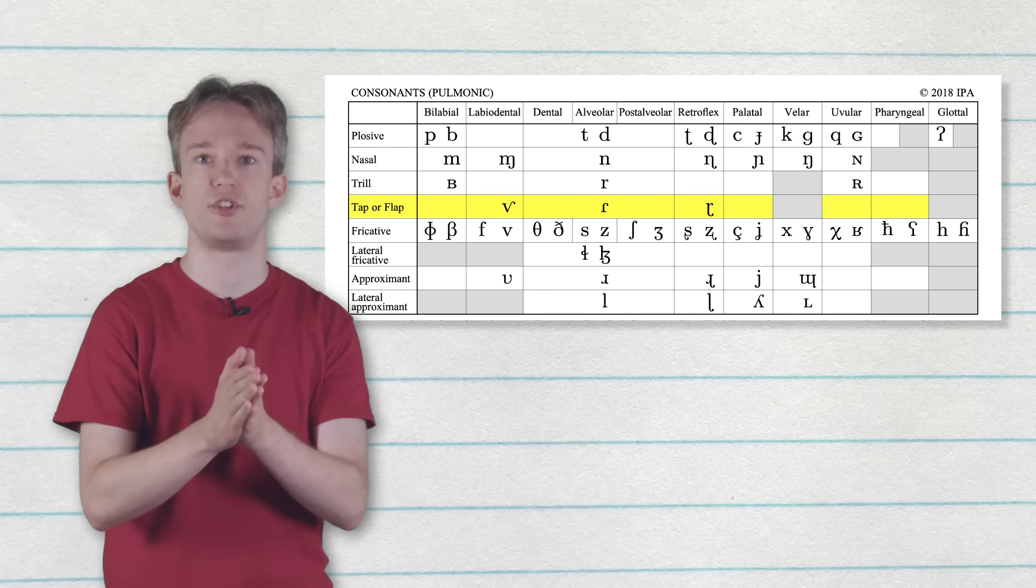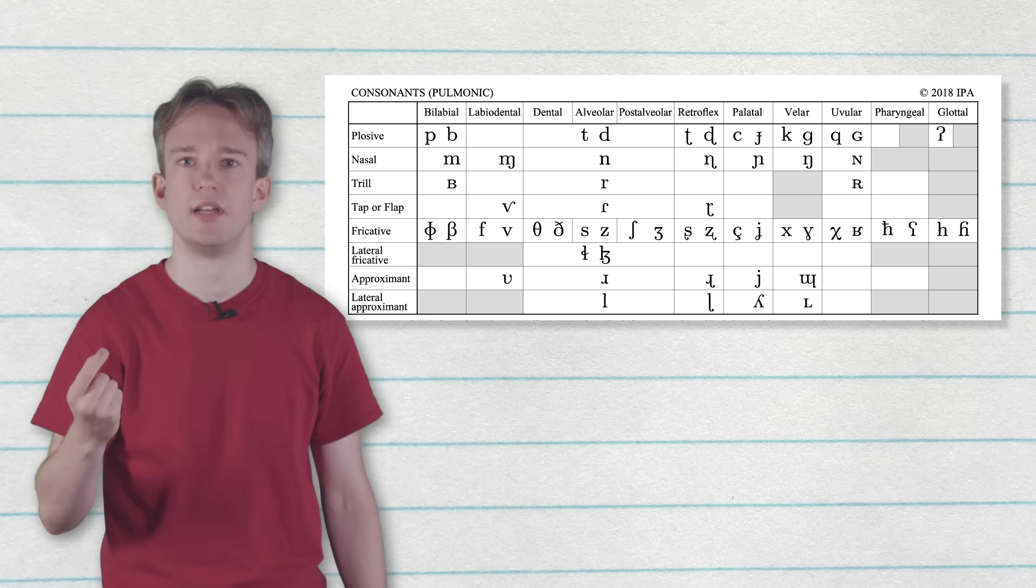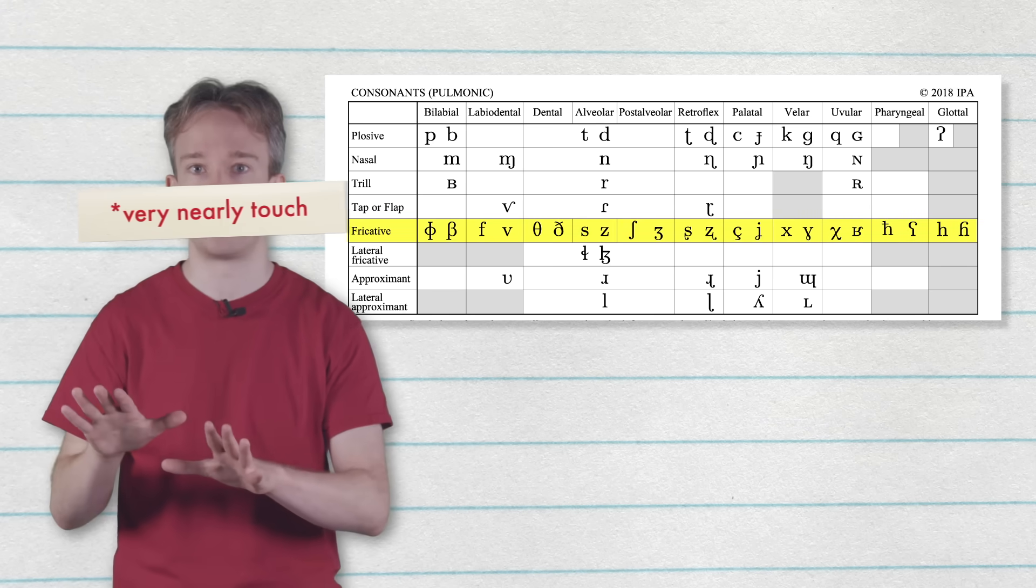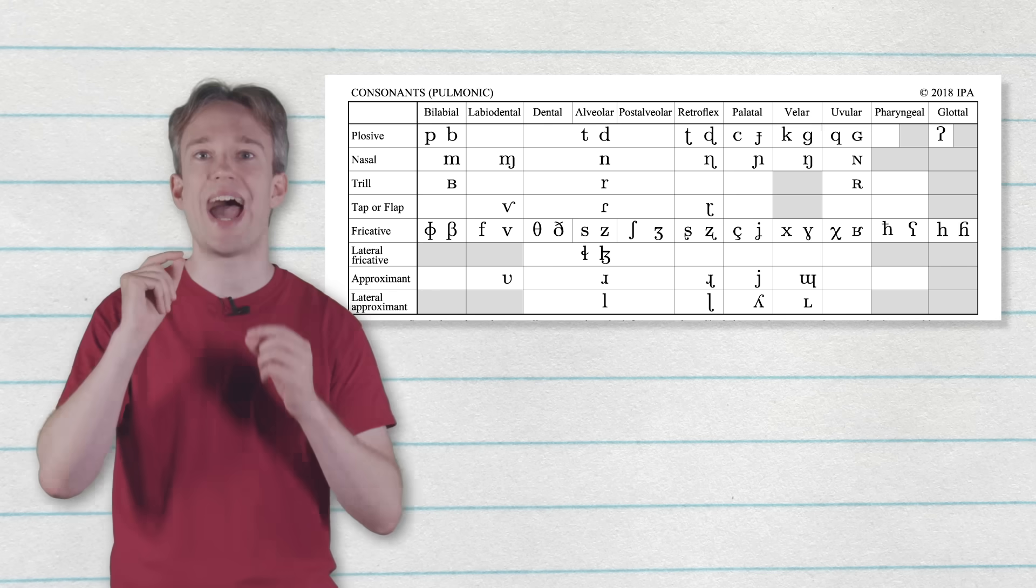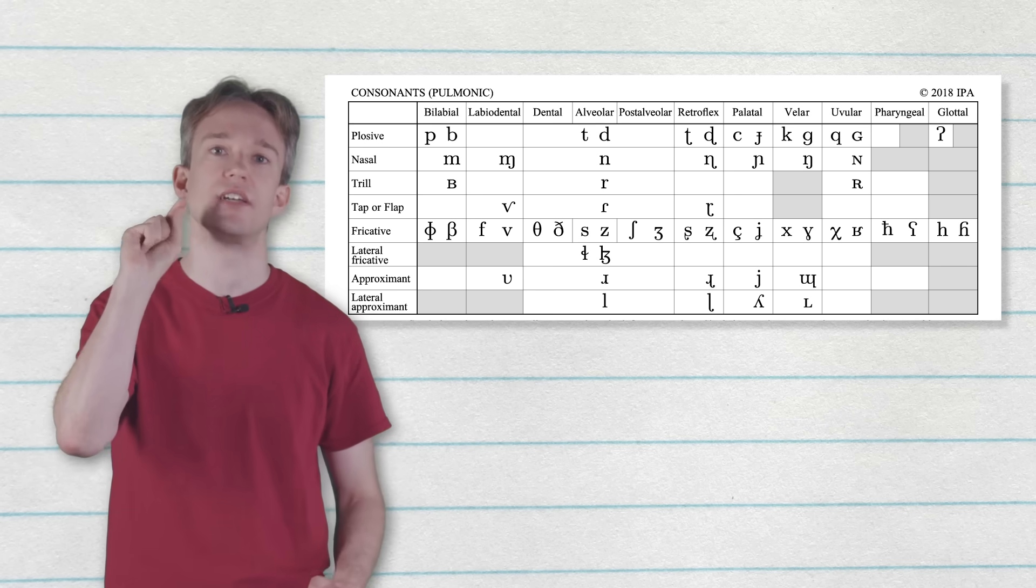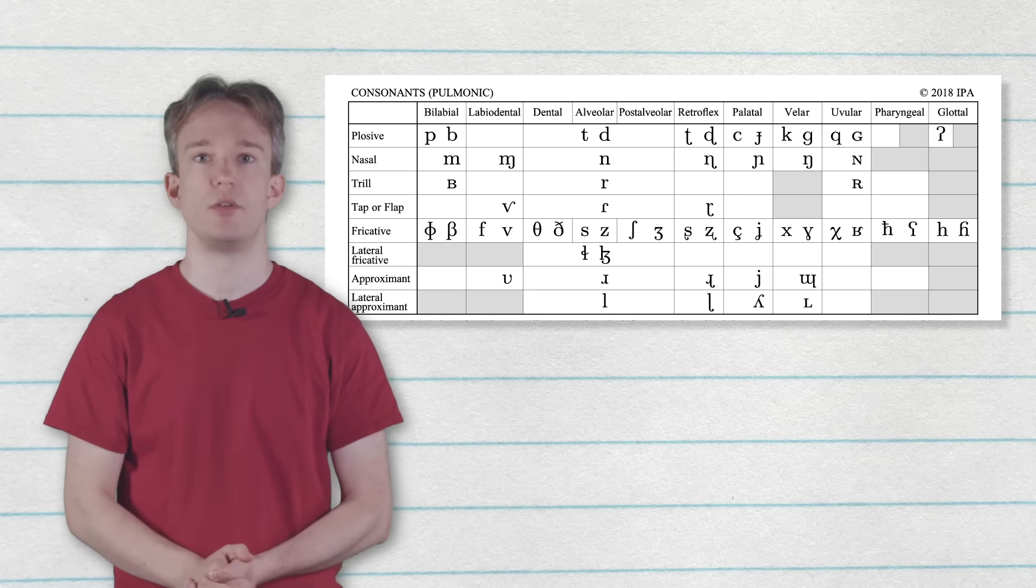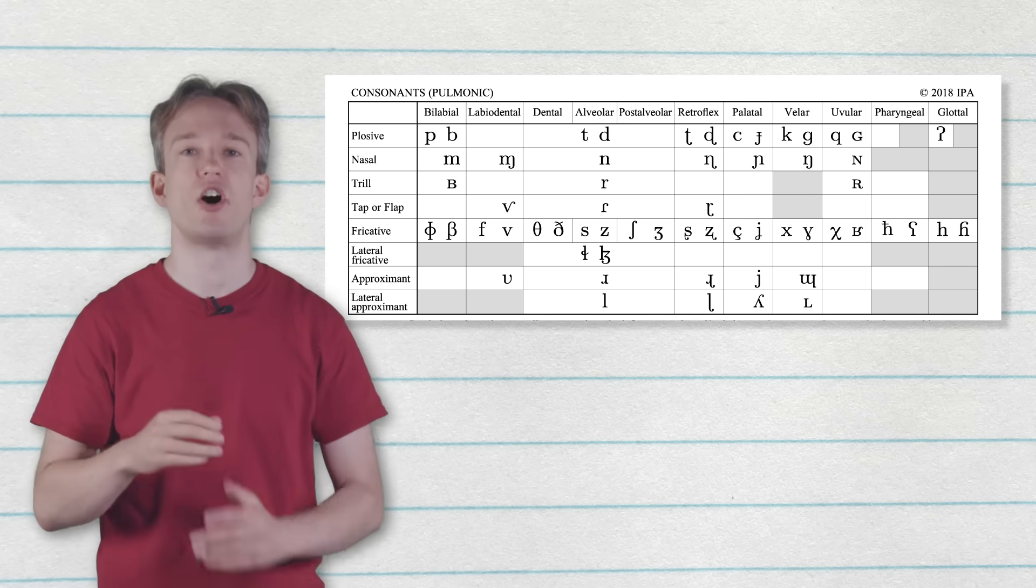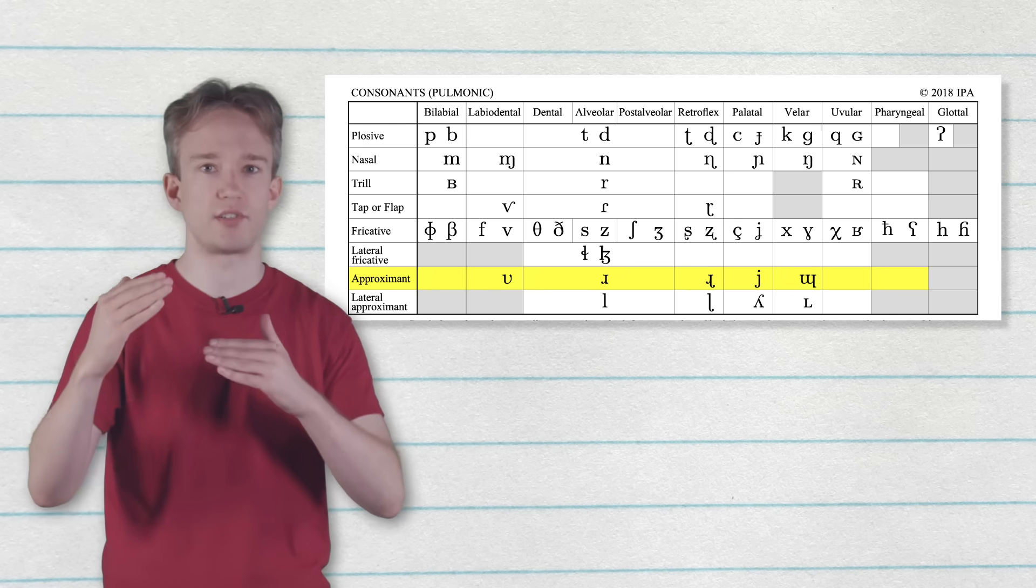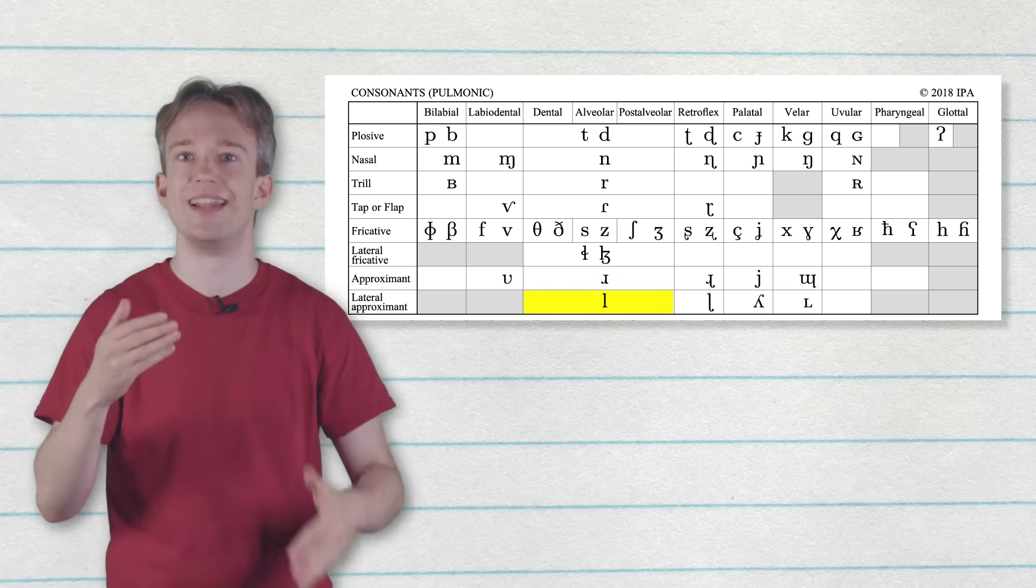Then we have taps and flaps, which are like those long trills but a tap is sort of the one-time equivalent. Next are the fricatives, where two parts touch. So s and z, where the two parts are the tip of your tongue and the alveolar ridge, which is the hard bit at the roof of your mouth, just behind your top teeth. Informally, that is the pizza ridge, because it's the bit that you burn when you bite into pizza that's too hot. And then, finally, there are the approximants, where two parts don't quite meet. Lateral means that air is going around the sides, like an l or the Welsh ll.